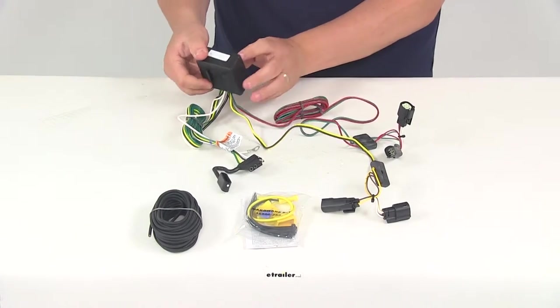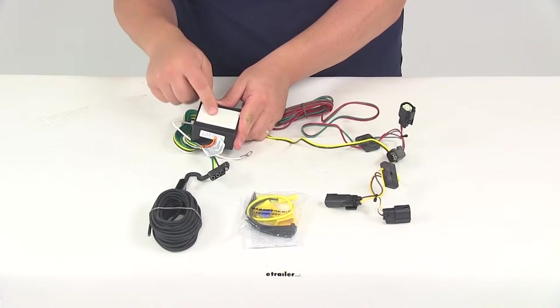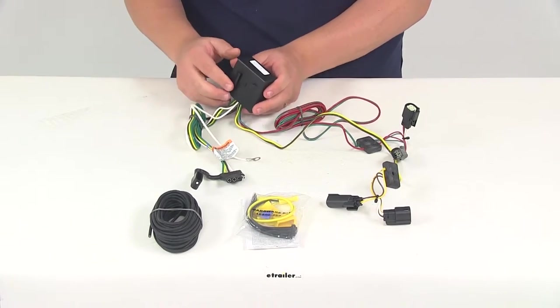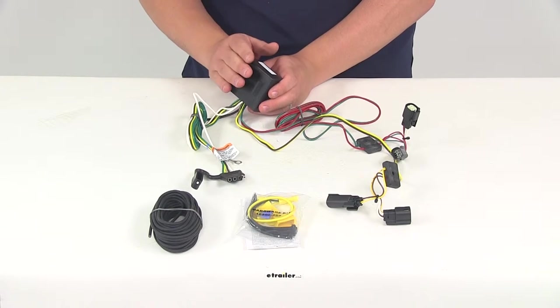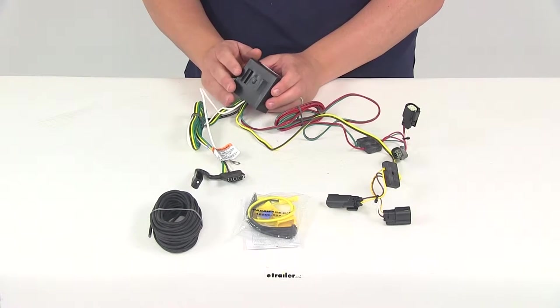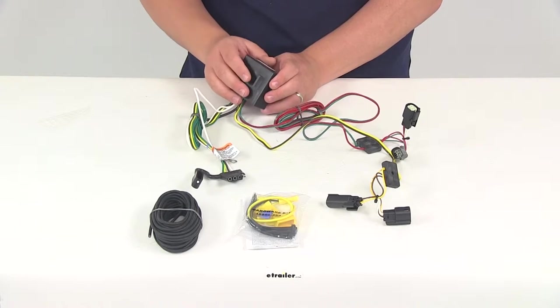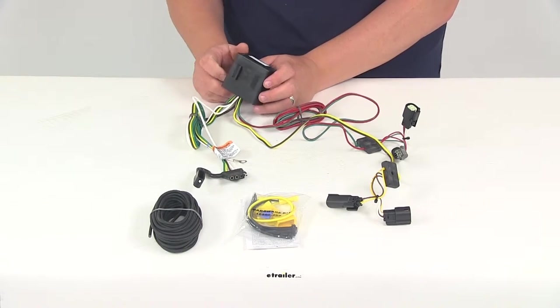Now the black box right here with the double-sided adhesive tape on the back side, this is going to be our modulite. This is going to ensure that the vehicle's wiring matches that of your trailers. The powered module is going to connect directly to the battery through the wiring and that's going to help avoid overloading the vehicle's electrical system.